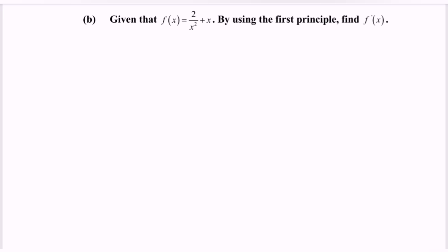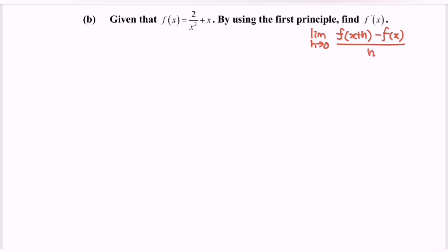So first what we have to do is to list out the formula for the first principle. The limit when h approaching 0 for the function f(x plus h) minus f(x) over h. Next, kindly substitute into the situation. So limit when h approaching 0 for the function f(x plus h).